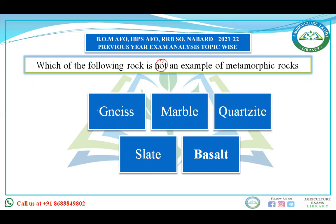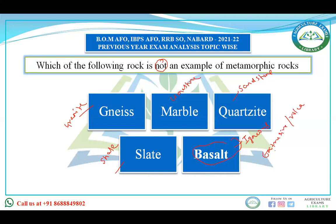Which of the following is NOT an example of metamorphic rock? Gneiss is a metamorphic rock formed from granite. Marble is a metamorphic rock formed from limestone. Quartzite is a metamorphic rock formed from sandstone. Slate is also a metamorphic rock formed from shale. Only basalt is left, and basalt is an igneous rock — specifically an extrusive or volcanic igneous rock formed at the surface, not beneath. Granite is an example of intrusive or plutonic igneous rock.